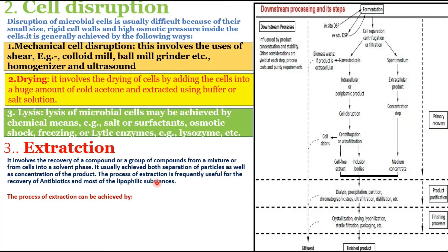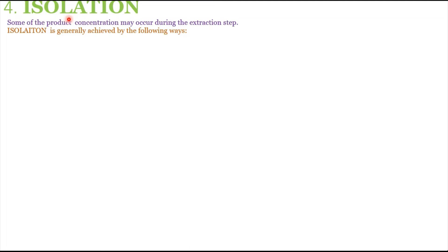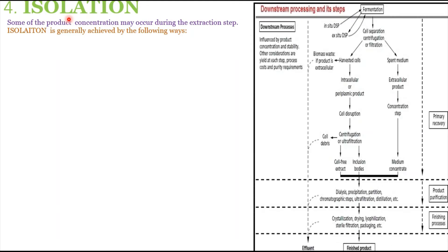Extraction is mainly achieved by three methods: liquid-liquid extraction, whole broth extraction, or aqueous multiphase extraction. The fourth step is isolation — the primary recovery of the product. After separation of particles, cell disruption, and extraction, we isolate our product. Some product concentration may also occur during the extraction step.